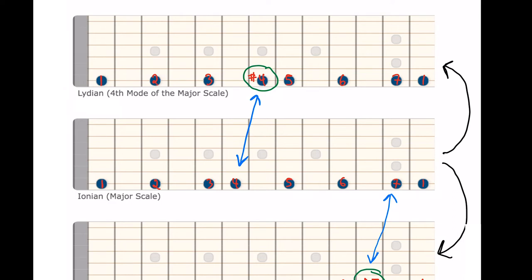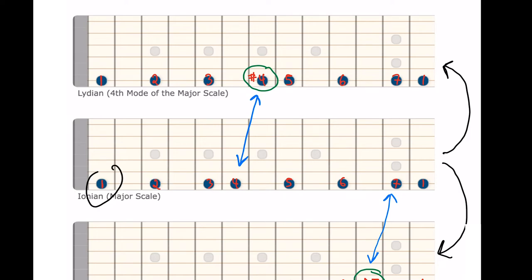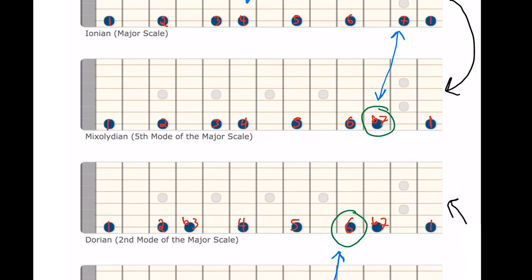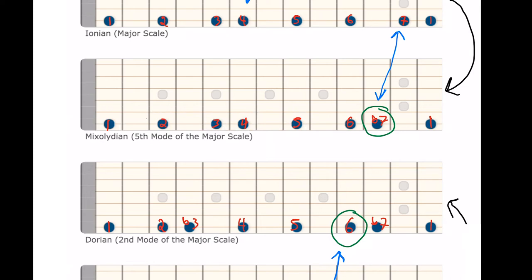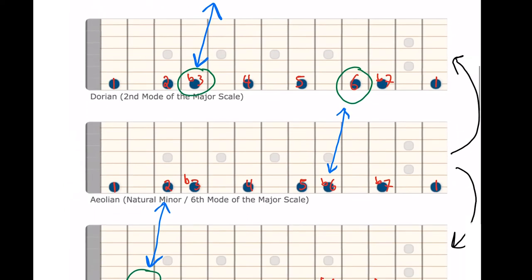Start the modes exercise with Lydian — the major scale with a sharp four. Play it up and down: root, two, three, sharp four, five, six, seven, one, then back down. Then shift and play the major scale, and you'll hear how that four changes. Then go to Mixolydian — you're flatting one note each time. From Mixolydian you go to Dorian minor, and from Dorian to Aeolian, and you can move through these quickly once you get used to it.